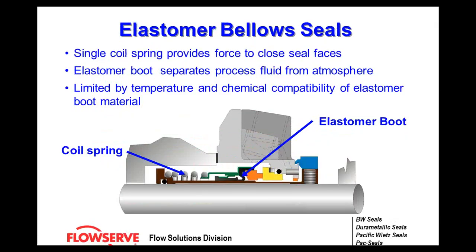Elastomer bellows are a variation of the pusher seal — you have coil springs which apply the closing force, and an elastomer boot that separates the process fluid from the atmosphere, limited to the temperatures and chemical compatibility of the elastomer. Elastomer bellows are a bit more forgiving to movement than a regular dynamic o-ring on a pusher seal, allowing for a little more axial or radial movement. You'll see these in general service seals.